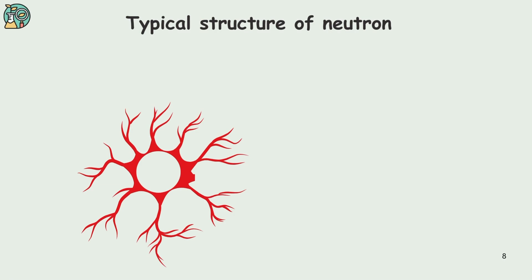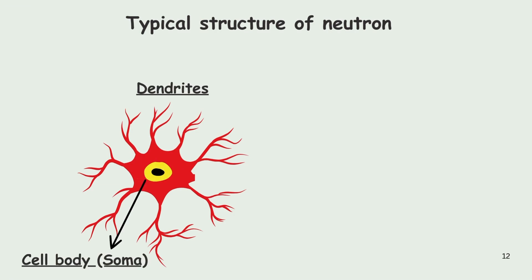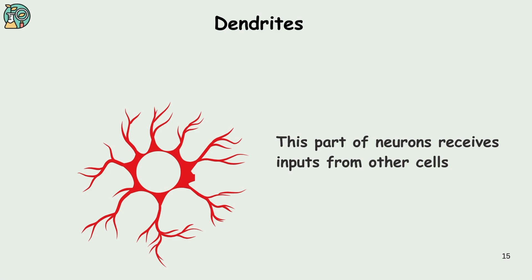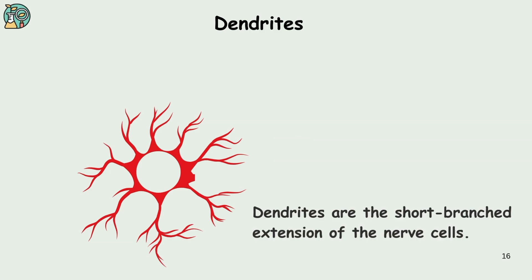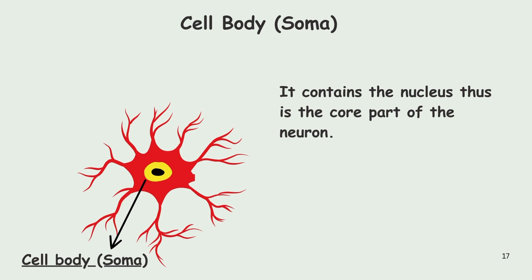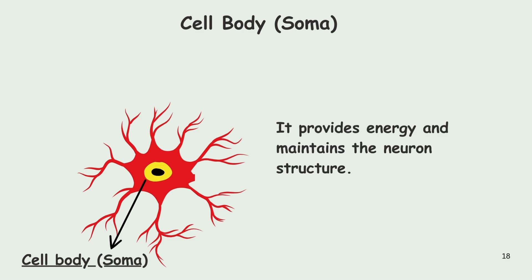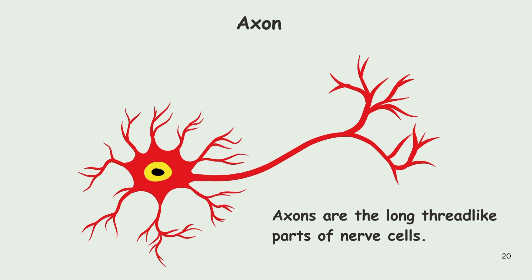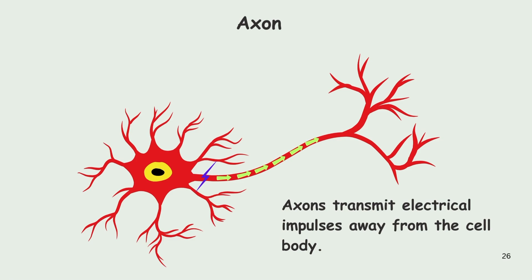A typical structure of a neuron consists of dendrites, the soma cell or cell body, and an extended nerve fiber known as the axon. The dendrites are the part of the neuron that receives input from other cells — they are the short branched extensions of the nerve cell. The cell body or soma cell contains the nucleus and is the core part of the neuron. The soma cells provide energy and maintain the neuron structure. The final part of the neuron is the nerve fiber, also known as the axon — the long thread-like part that transmits electrical impulses away from the cell body.